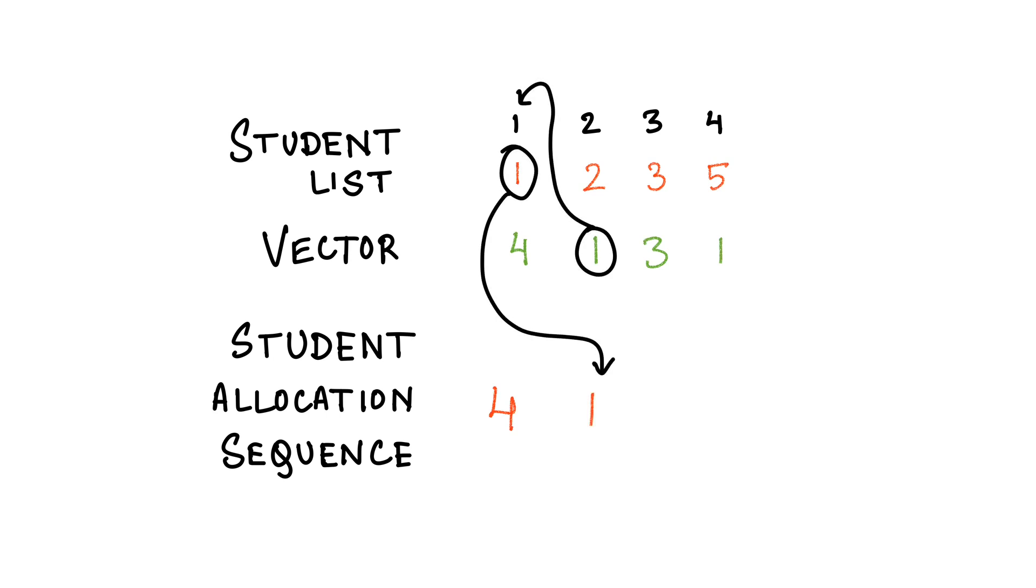Next we pick the second element in the vector that is 1. Again we remove the first student in the student list, that is 1 again, and append that student to the student allocation sequence.